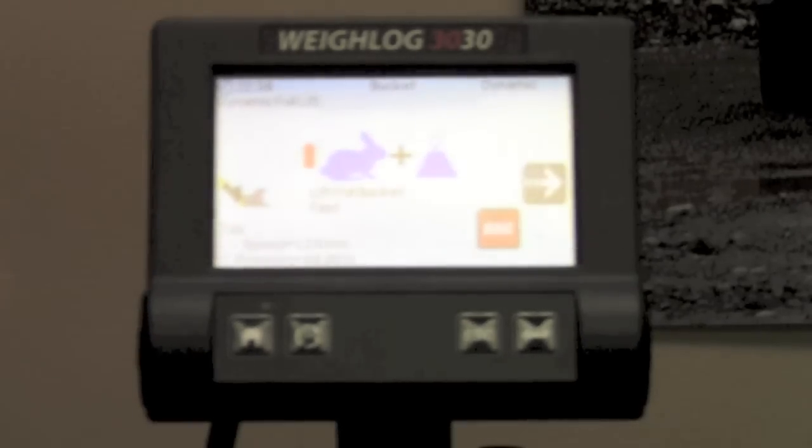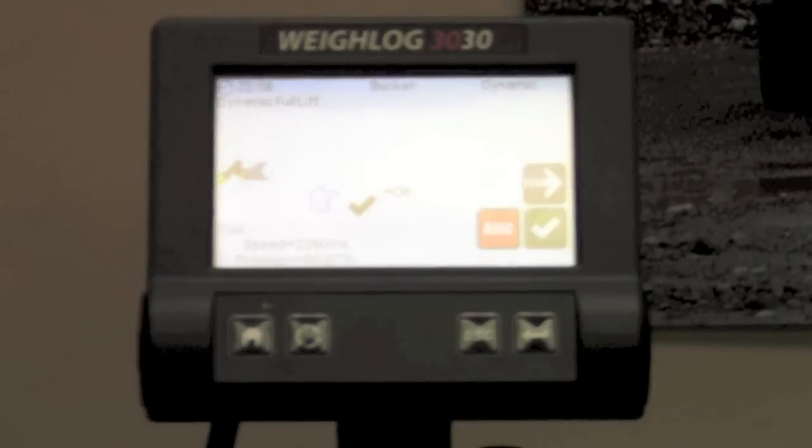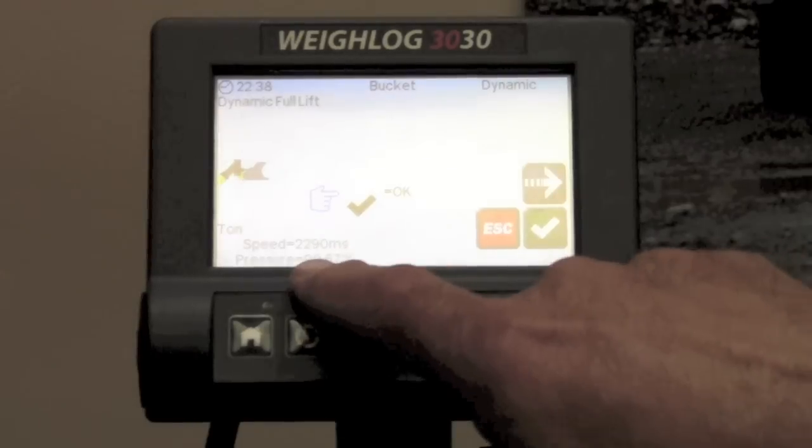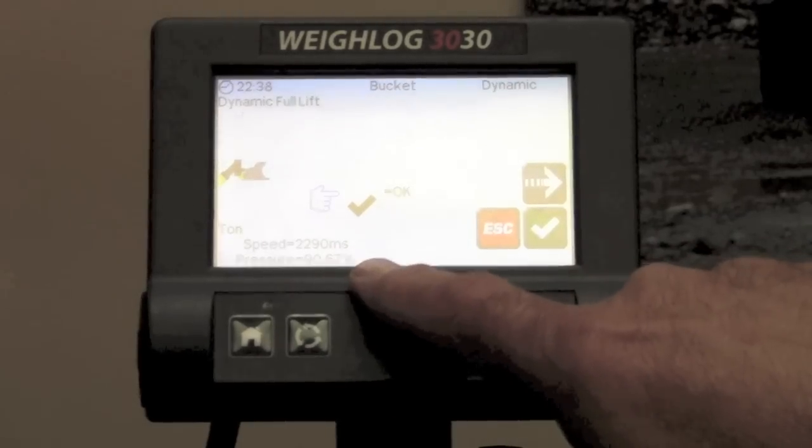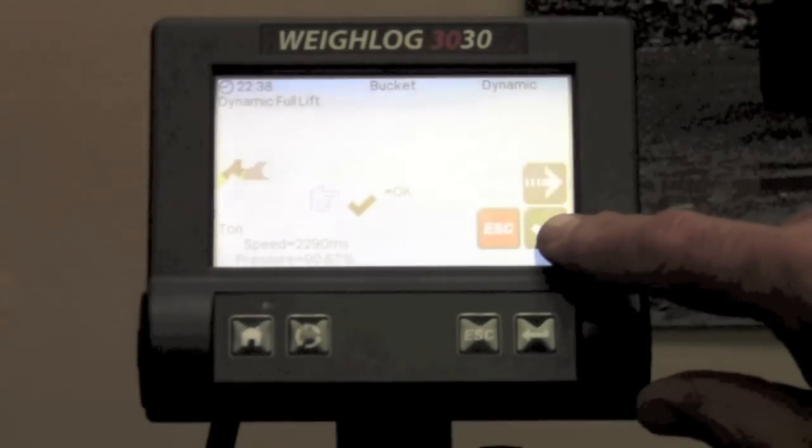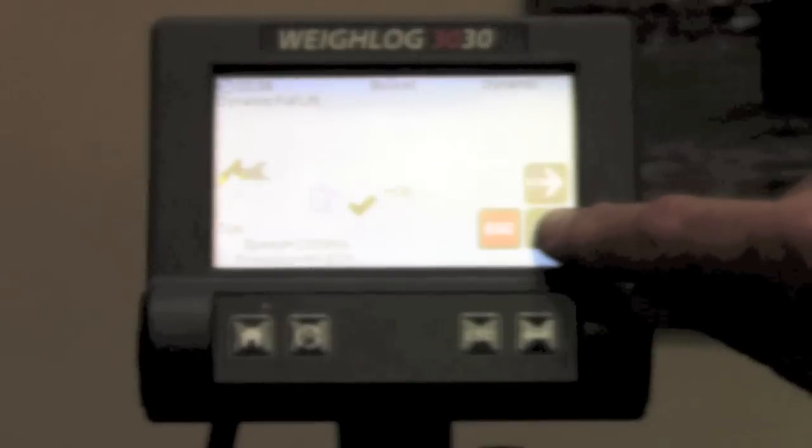So at this point we would load the bucket and do a fast lift. And you can see down here that it read the speed out and it read the pressure as well as a percentage. Once the bucket is in the air, we have completed the full dynamic fast lift.